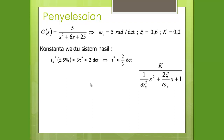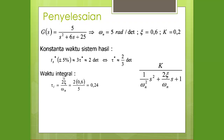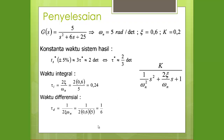Spesifikasi: settling time 5% diinginkan sekitar 2 detik. Untuk settling time ±5%, berlaku 3·TO* = settling time, sehingga 3·TO* = 2 detik, maka TO* = 2/3 detik. Waktu integral: TOI = 2ζ/ωn = 2×0.6/5 = 0.24 detik. Waktu diferensial: TOD = 1/(2ζ·ωn) = 1/(2×0.6×5) = 1/6 detik.